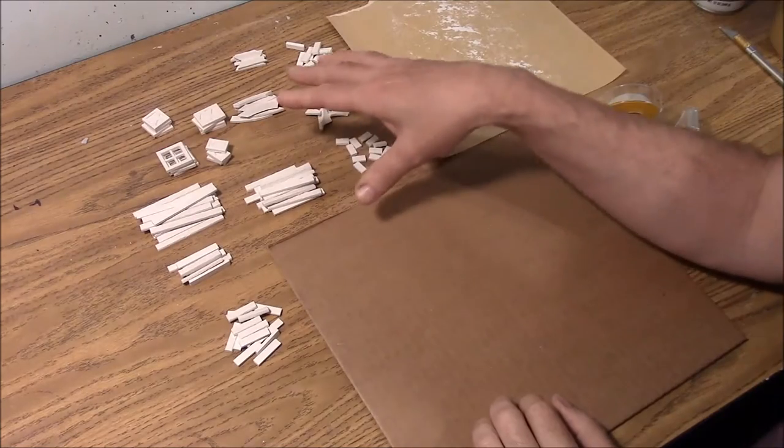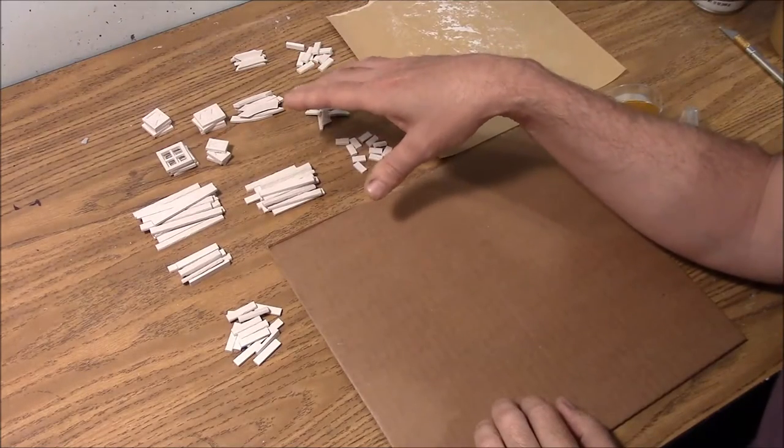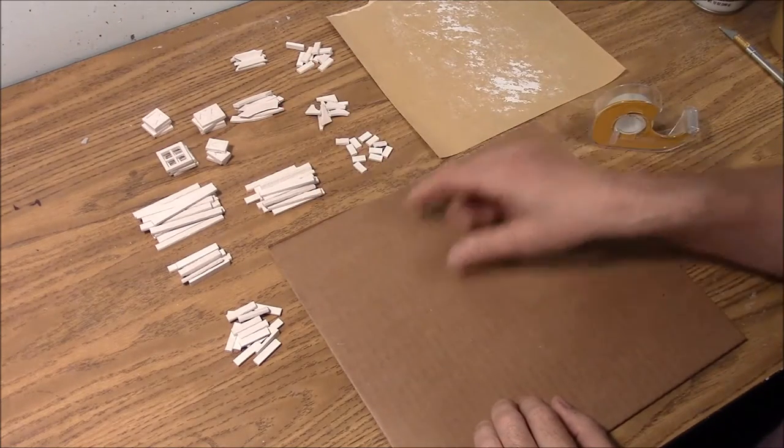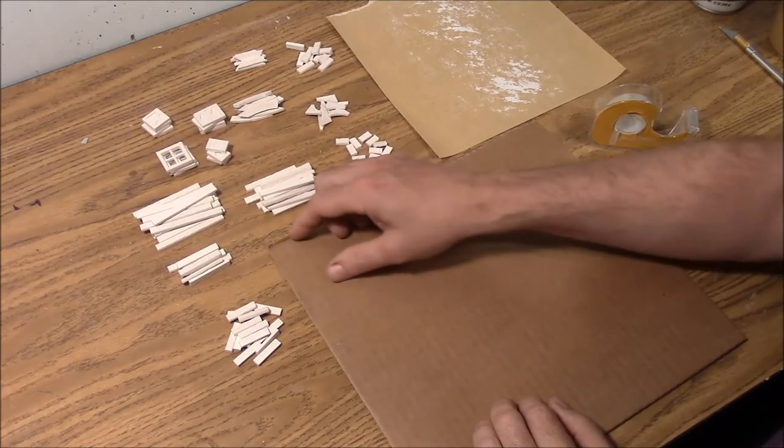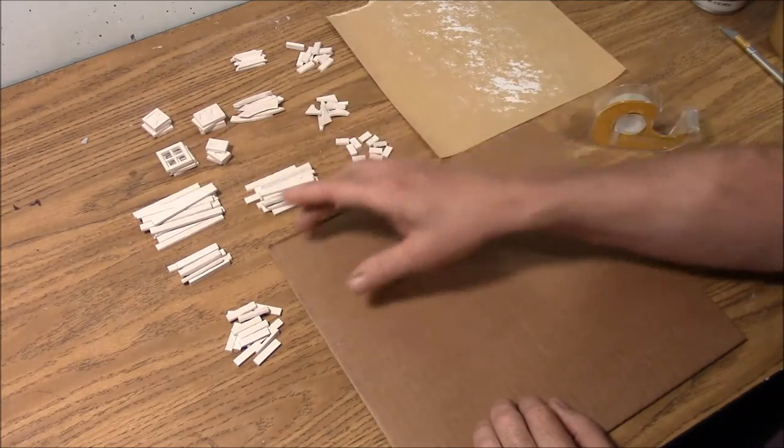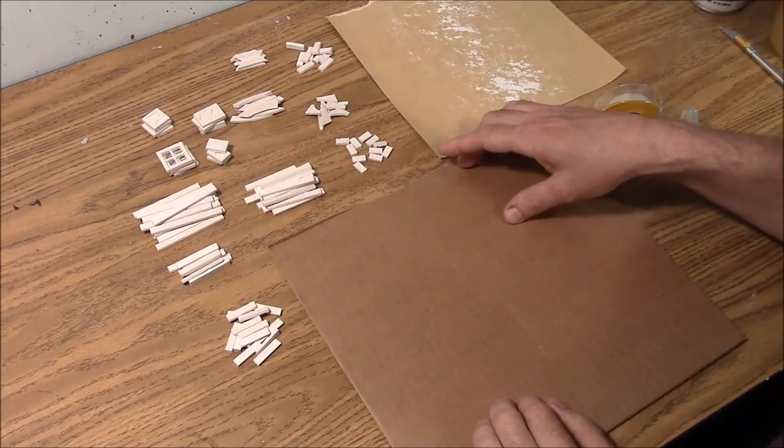Now I would suggest that you sort the pieces before you start. That way you can stick on all the 3 inch pieces, then the 2 inch pieces, and so on. And after they're painted, it's much easier to re-sort them into piles, because you have all the same lengths together in the same spot.